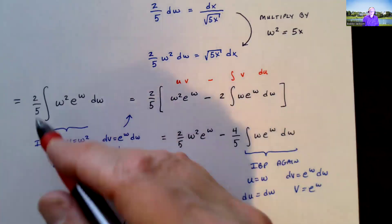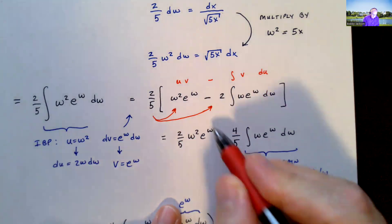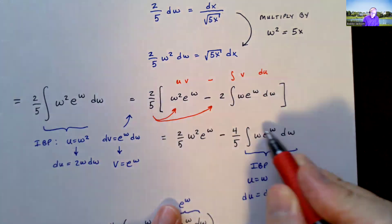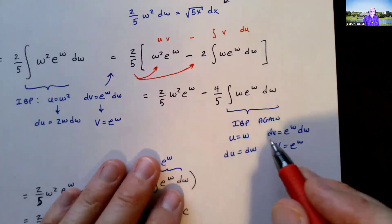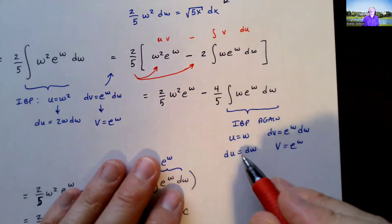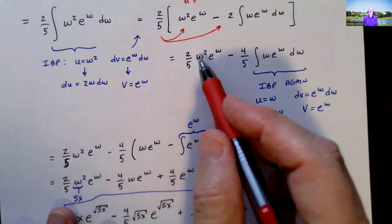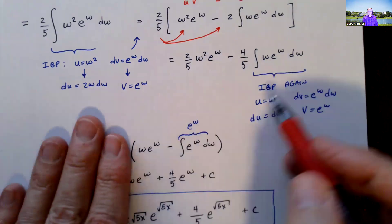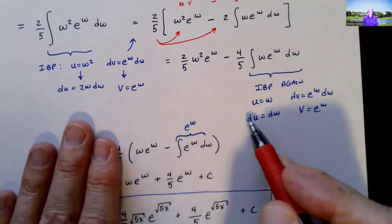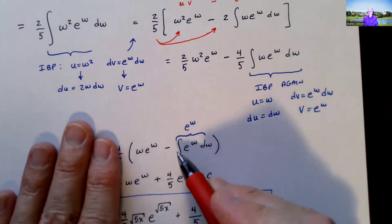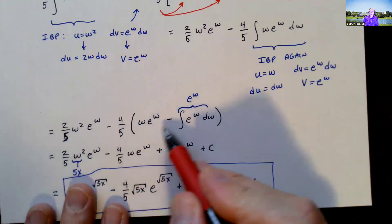Don't forget to distribute the two-fifths through. We get two-fifths w squared e to the w minus four-fifths times the integral of w e to the w dw. This integral is simpler than what we started with, but it still needs integration by parts one more time. Let u equal w and dv equal e to the w dw; then du equals dw and v equals e to the w. Applying IBP again gives w e to the w minus the integral of e to the w dw, which equals w e to the w minus e to the w.